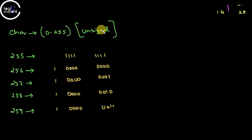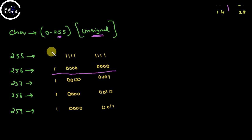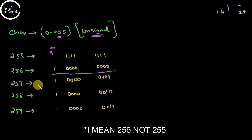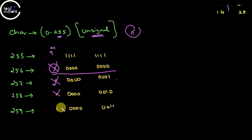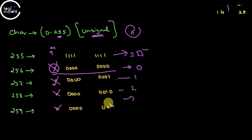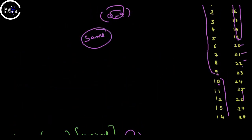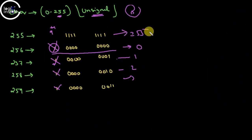In unsigned char the max value is 255. If I store 256, its binary value requires a 9th bit in addition to 8 bits — because 255 uses all 8 bits. Since char only has 8 bits, only the lower 8 bits are taken and the 9th bit is discarded. So after 255, the value wraps back to 0, 1, 2, 3 — the same looping logic as decimal digits.